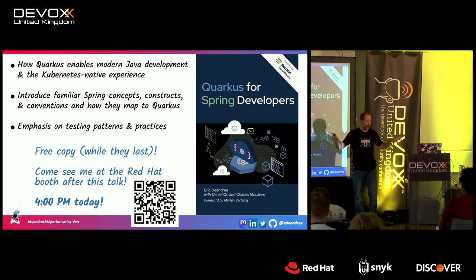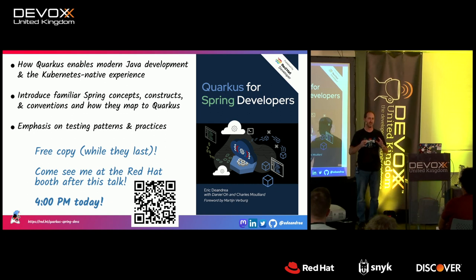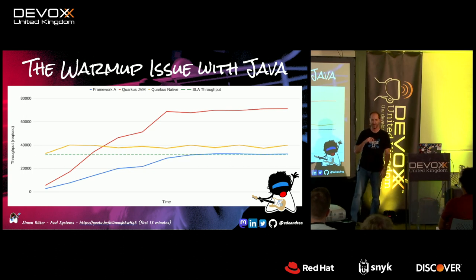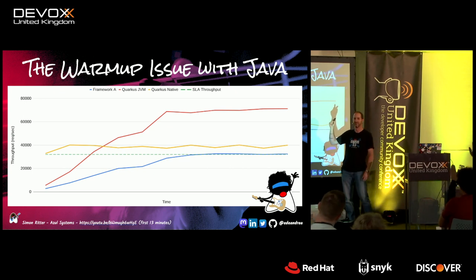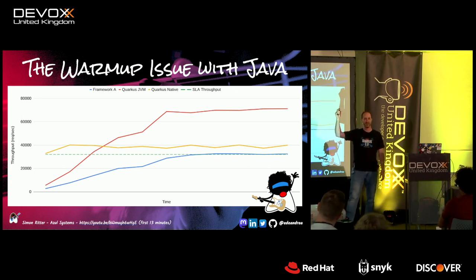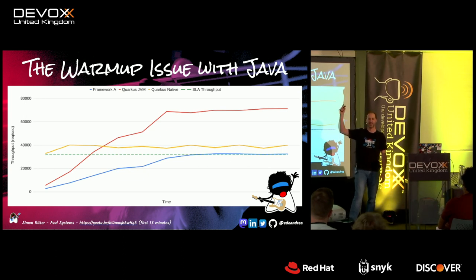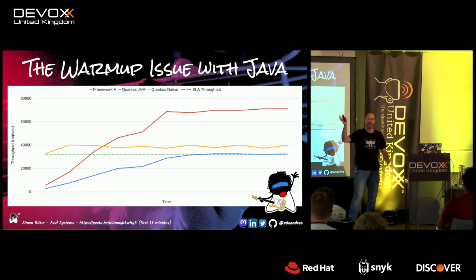As I started to learn Quarkus, like anything else, you compare and contrast with things you already know — how is it the same, how is it different. I've tried to condense this talk into about 50 minutes with a lot of live coding. Show of hands: who's running Spring in production? Who's running Quarkus in production? Who's heard of Quarkus? Who's played with it on their own?